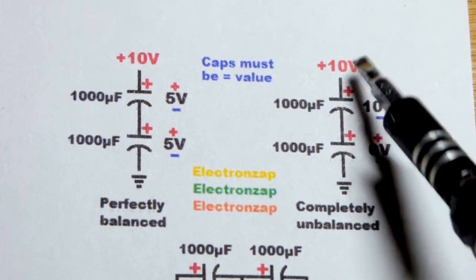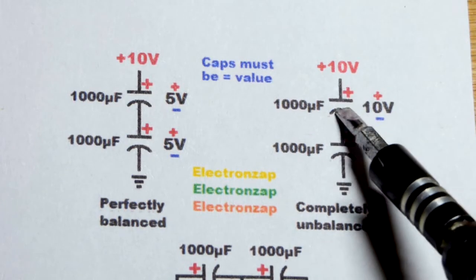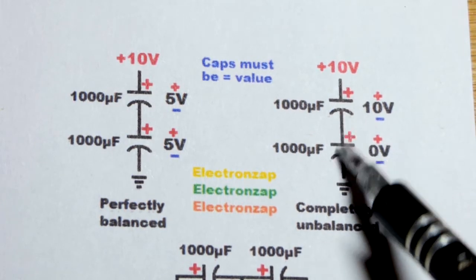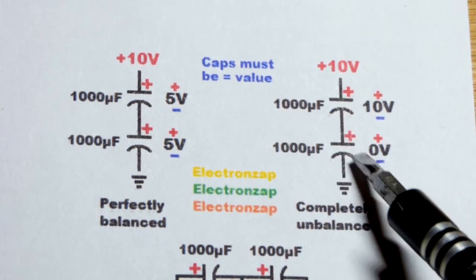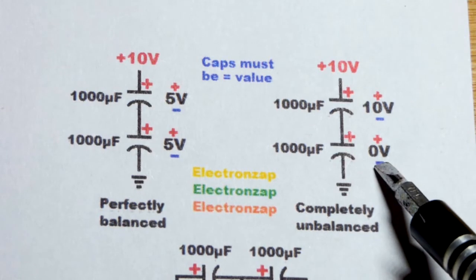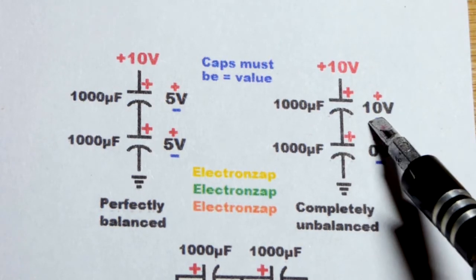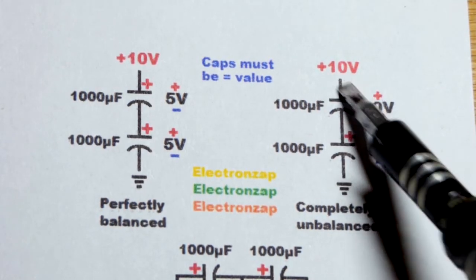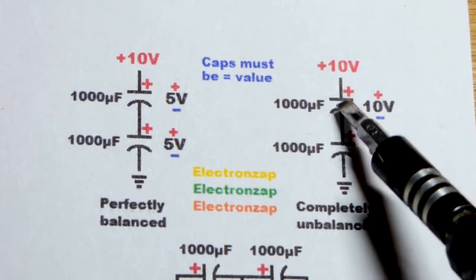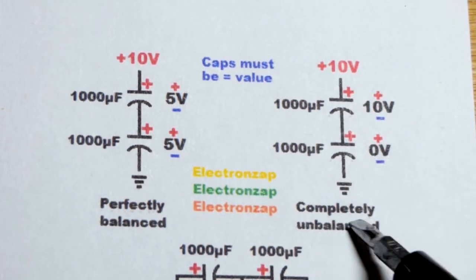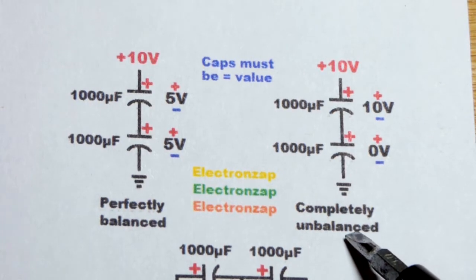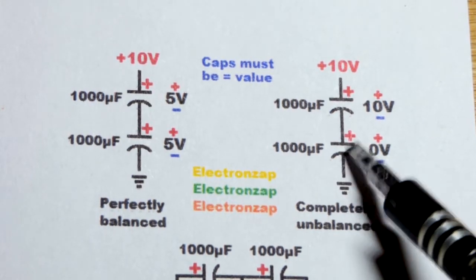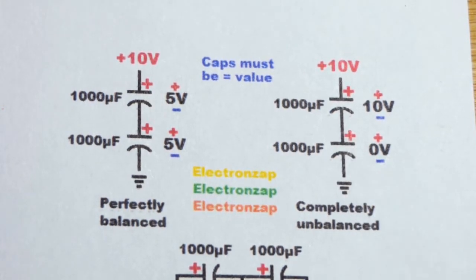If this one's allowing a lot of current to leak through it and that one hardly any, over time charges are going to build up and leave there and go through that capacitor. So at some point this capacitor won't have any voltage across it and that one will have 10 volts across it because that's the supply voltage. It will have all of the voltage across it. That's if it's completely unbalanced. Probably will never get that bad, but if that one's really leaking a lot of current, it is possible.